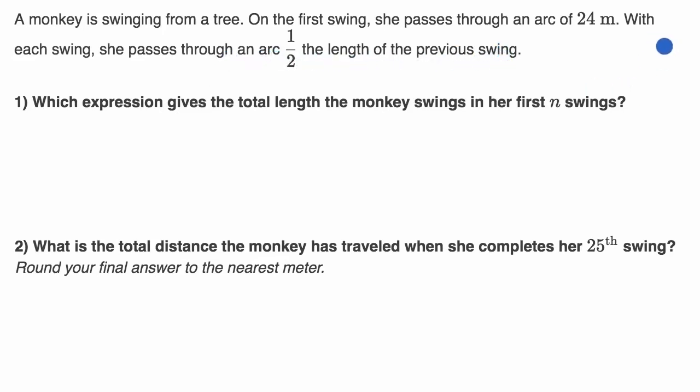So what's going on here, let's say this is the top of the rope or the vine that the monkey is swinging from. And so on that first swing, I'll draw a little monkey here. So this is my little monkey. So on that first swing, the monkey will go 24 meters. So might do something like this. Then that arc is 24 meters.